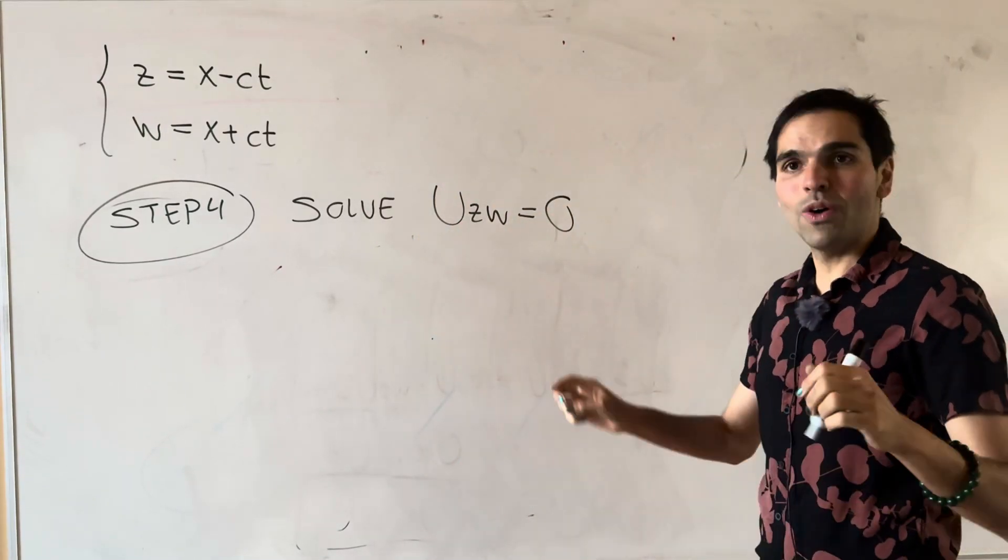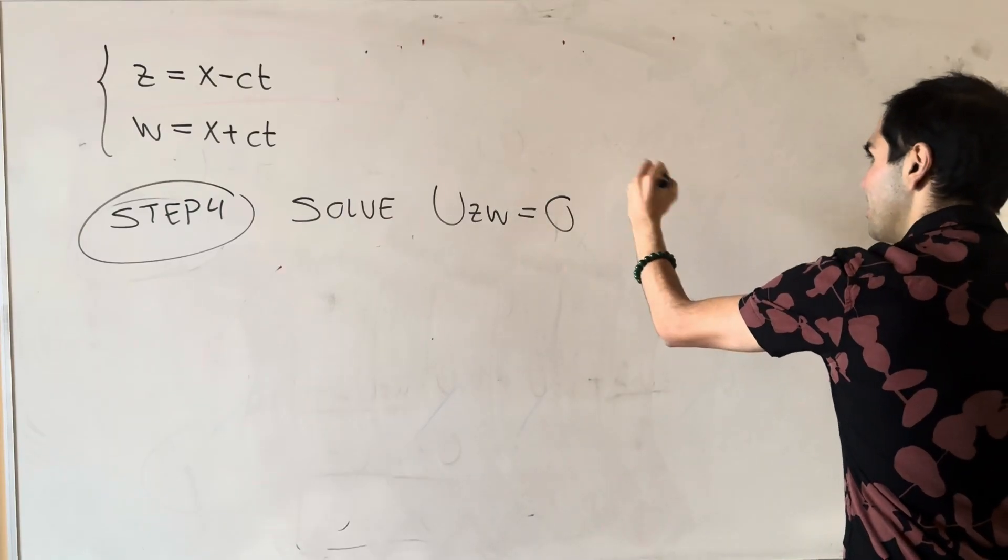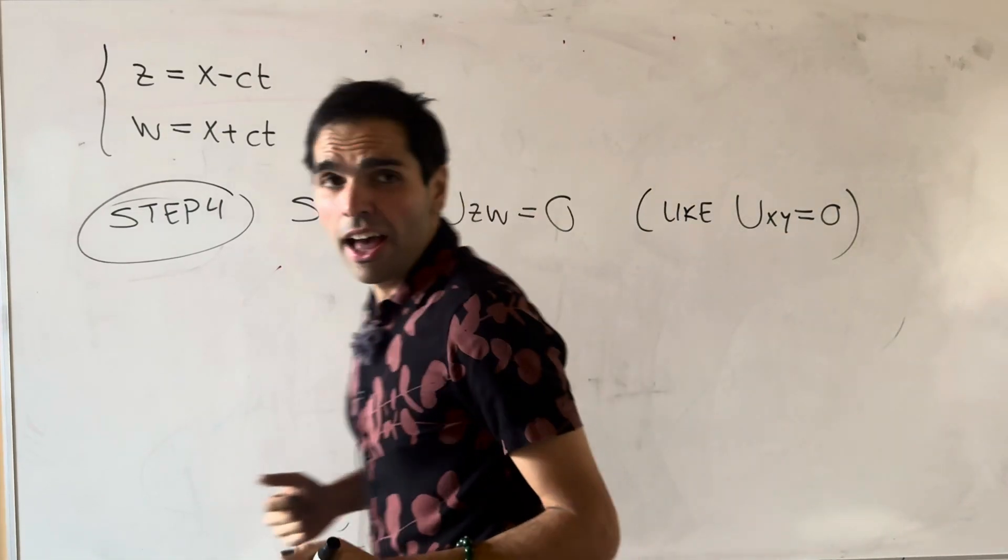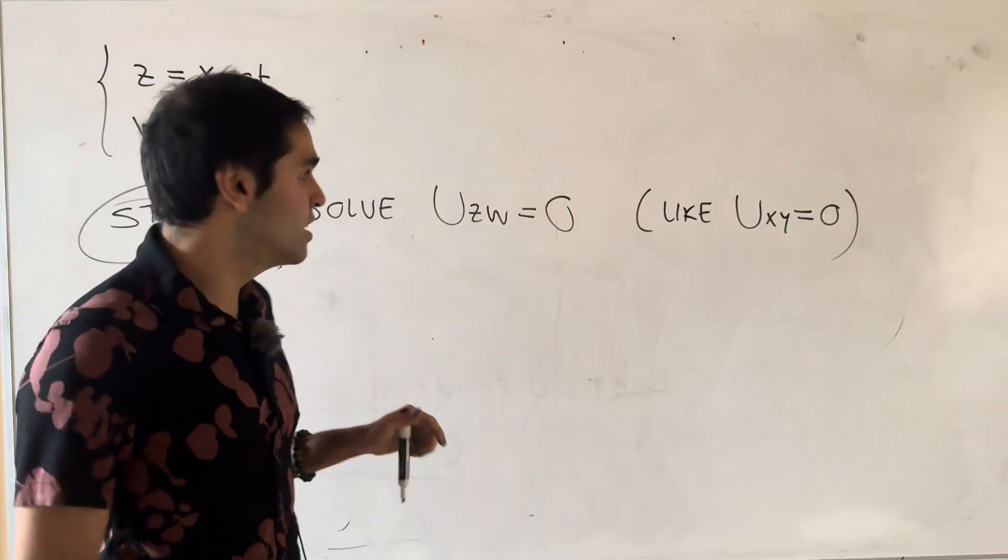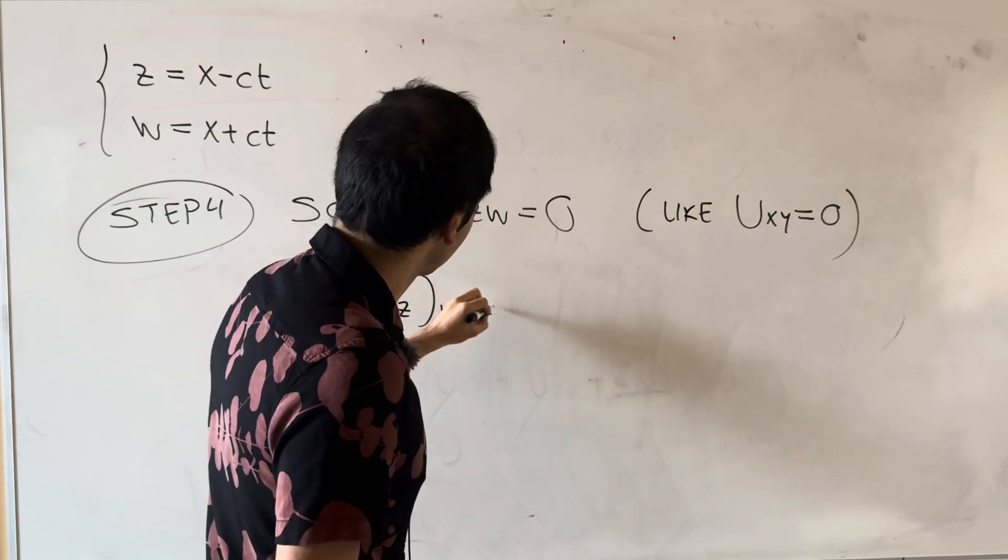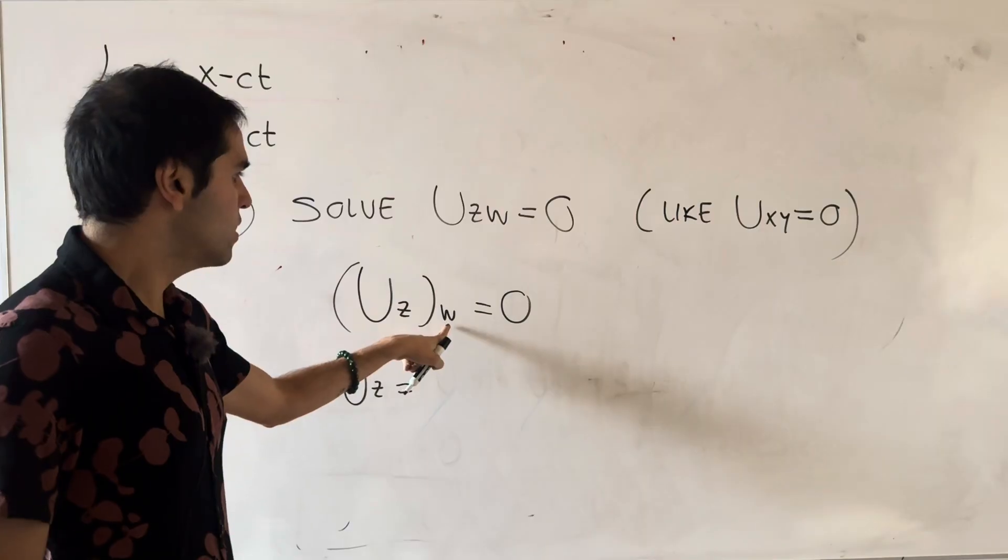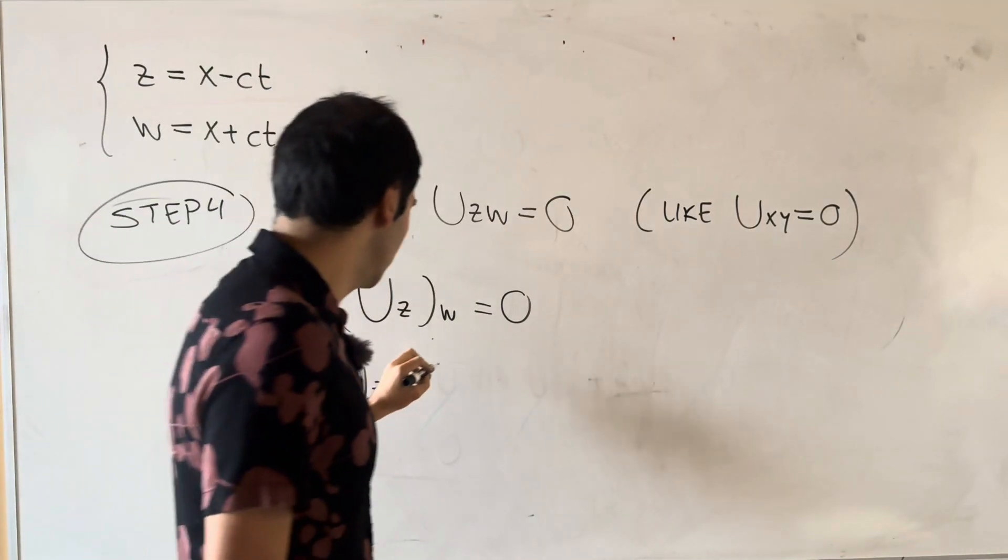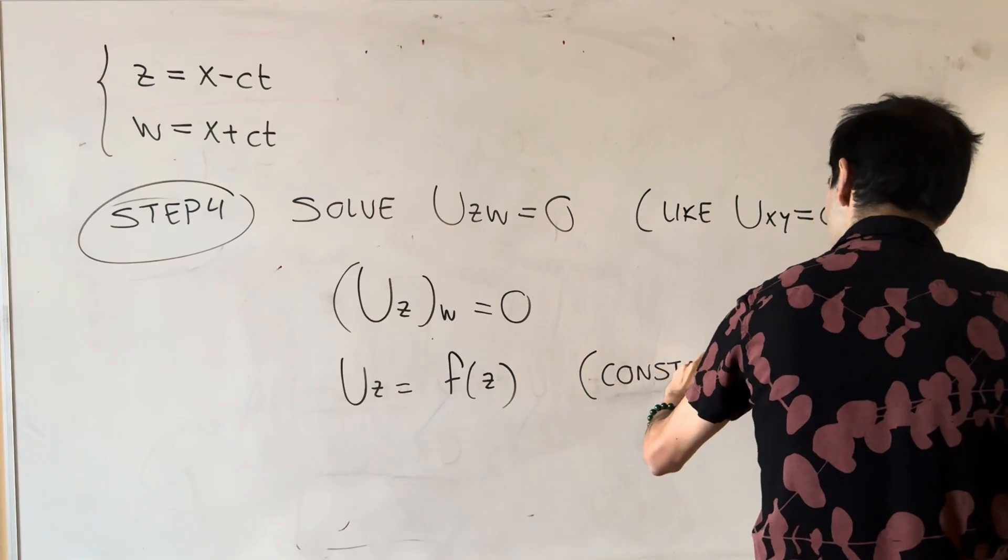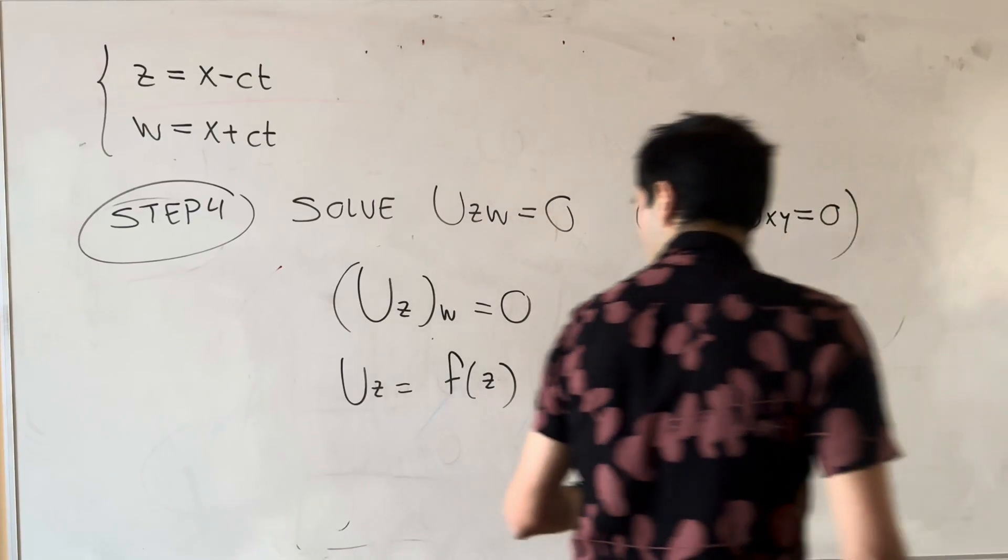And in fact, this was one of our simple PDEs that we covered at the beginning of the course. And in fact, it's exactly like the PDE U_xy equals zero. And in fact, same thing, but just with those different variables. So let me just remind you how to solve it. This is the same thing as U_zw equals zero. So in other words, U_z, it does not depend on w. So it's purely a function of z. So it's f of z, again, because it's constant with w.